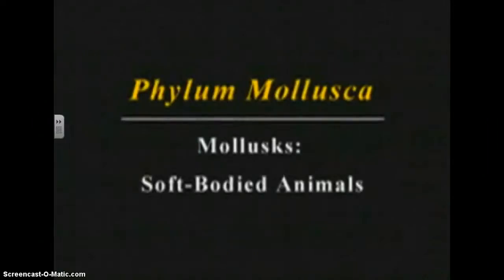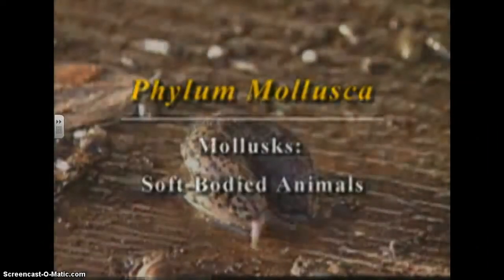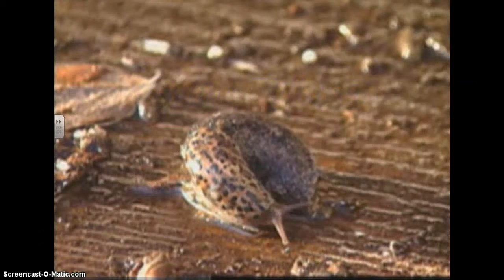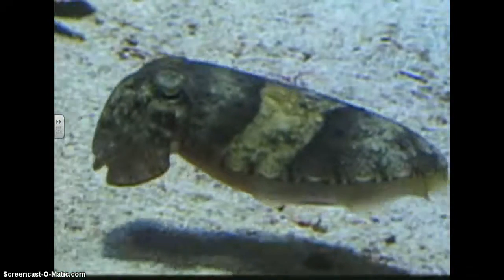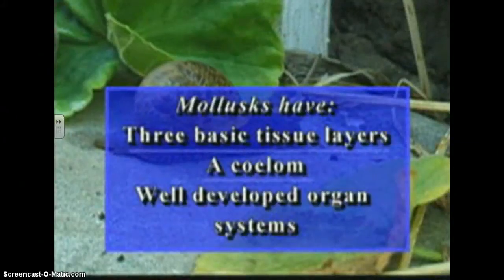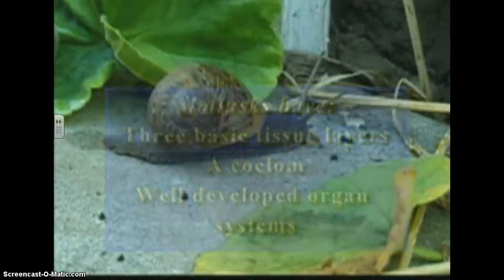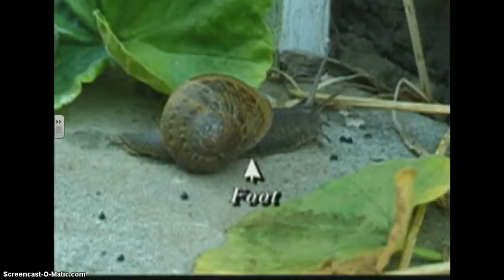After the worm phyla, the next most complex group of organisms are the mollusks, the soft-bodied animals. Two of the most advanced mollusks are the octopus and the cuttlefish, both of which live in salt water and are considered to be highly intelligent animals. The snail seen here is a fairly typical mollusk. It has three basic tissue layers, a coelom, and well-developed organ systems. The snail's head and sense organs are connected directly to the large muscular foot it uses for locomotion. Many of their internal organs are located within their shells, but in times of danger there is still enough room inside their shells for the rest of their body.